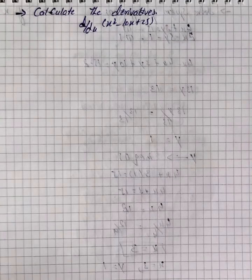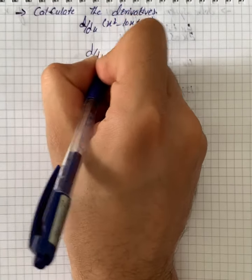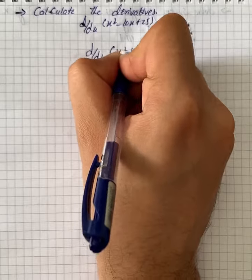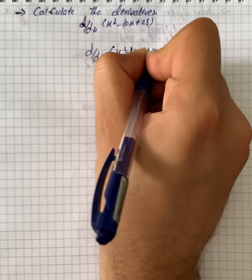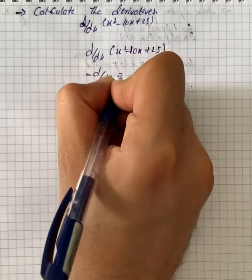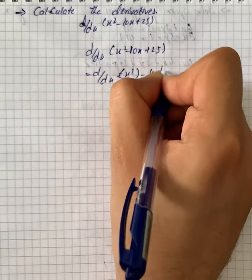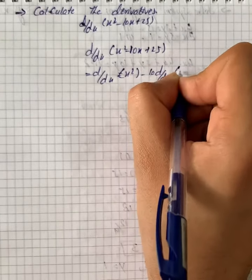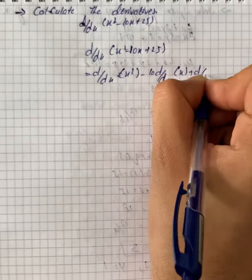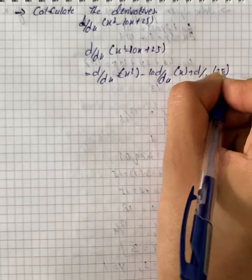We have to calculate the derivative. We start solving d/dx of (x² - 10x + 25). We can write that as d/dx of x² minus 10 times d/dx of x plus d/dx of 25.